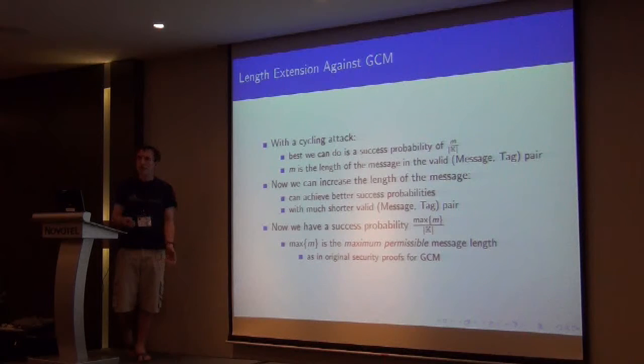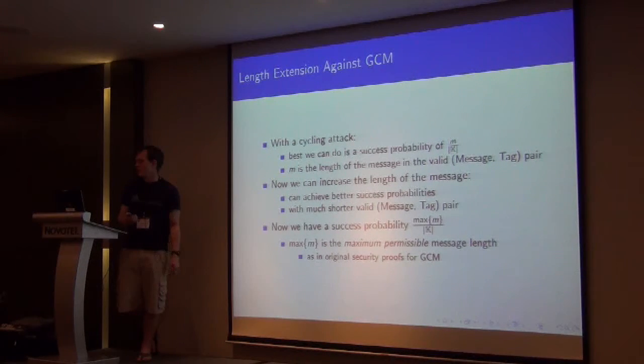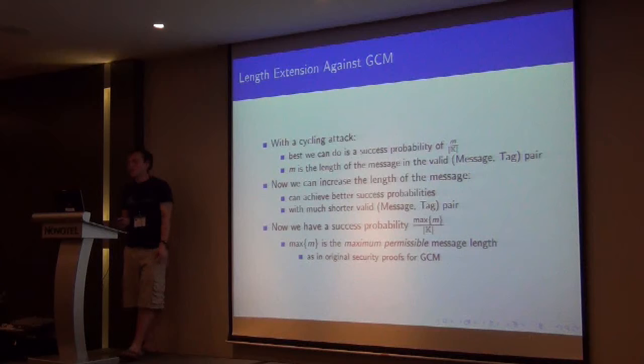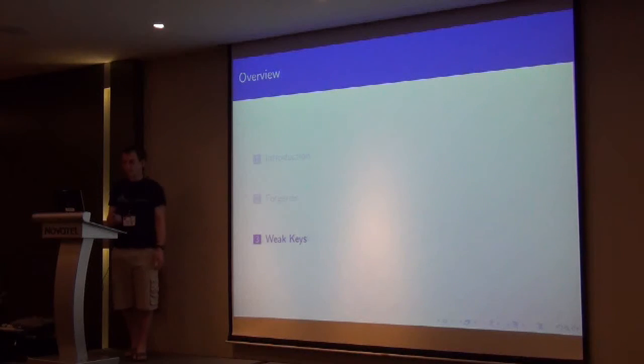Which now we can get much better success probabilities. And we don't care how long the original valid message is. In this case, we've got a success probability of the maximum of m over the size of k. So this is the maximum permissible message length that your construction operates on. This is described in the original security proofs. It's in Dan's Poly1305 paper. But this is the idea that sort of realizes that.